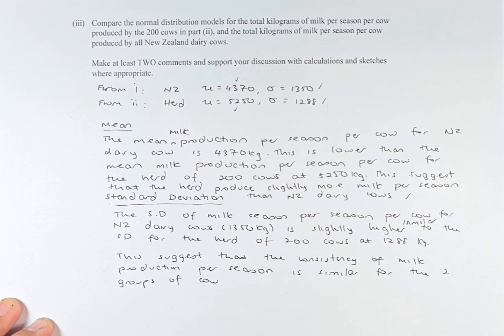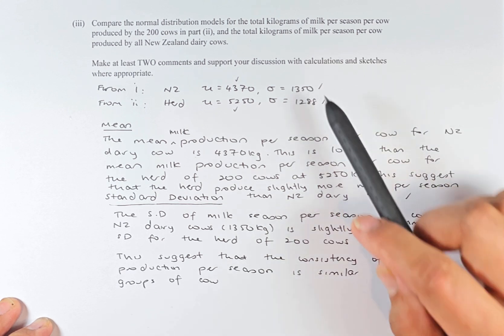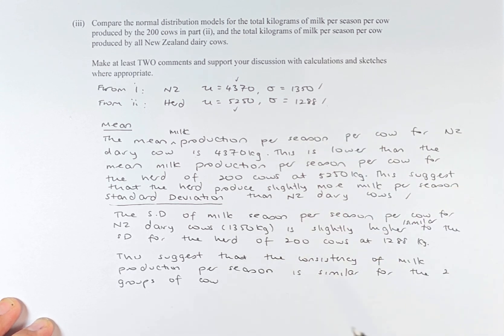You need to make a justification why you say that. And then you can say this suggests that the consistency of milk production per season for both sets of cows is similar for both of them. So that is how you answer this question.